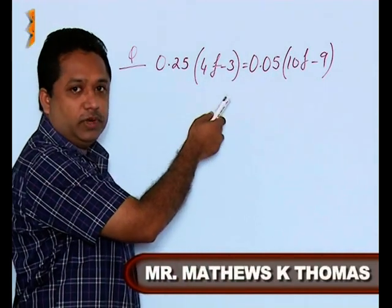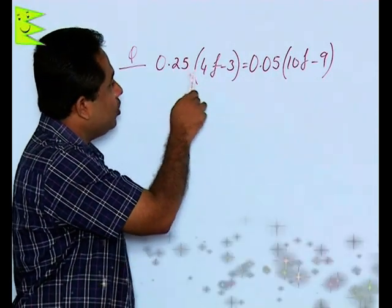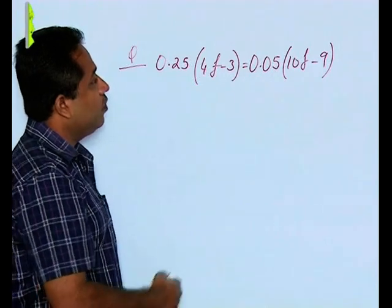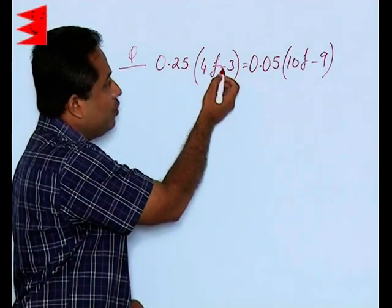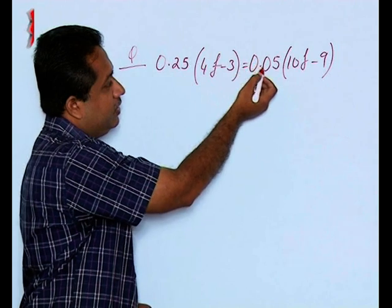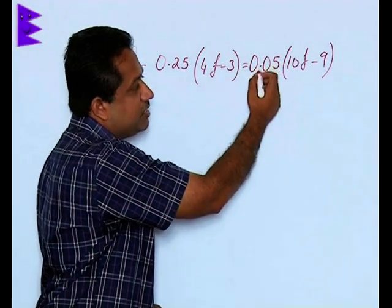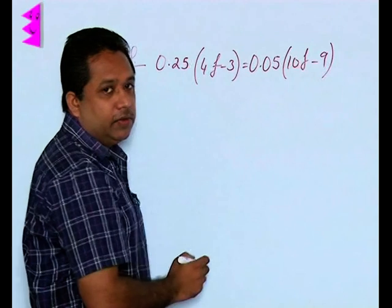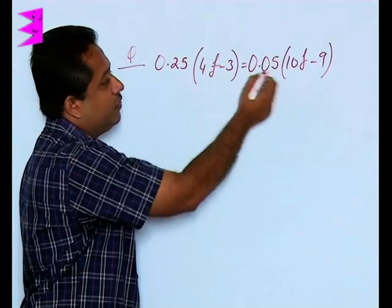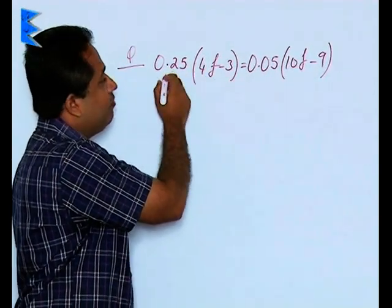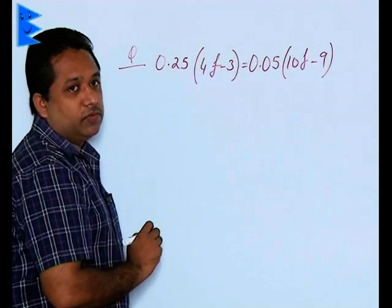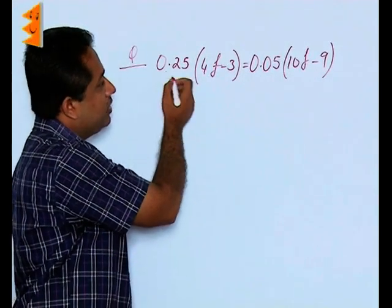The brackets have to be opened. Multiply 0.25 into 4F, then 0.25 with minus 3, then 0.05 with 10F and 0.05 with minus 9. The signs are very important here. You will have to do the correct multiplication. Let us look at this step by step.